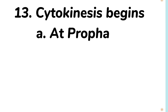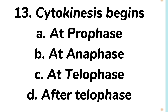Number 13. Cytokinesis begins: A at prophase, B at anaphase, C at telophase, D after telophase. Answer: B at anaphase.